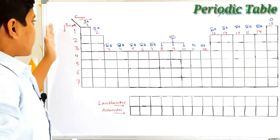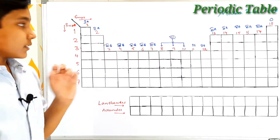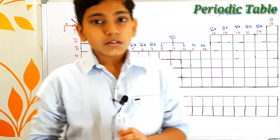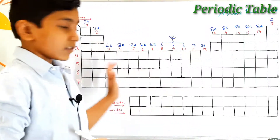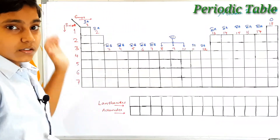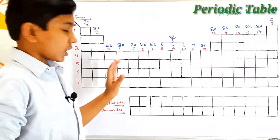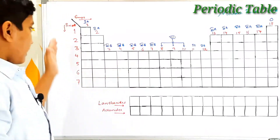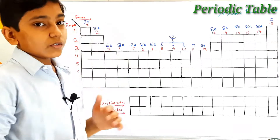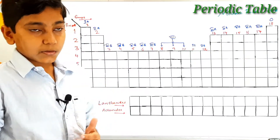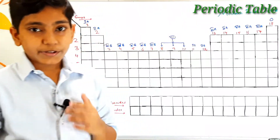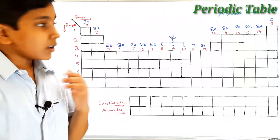Firstly, periods — the rows in the modern periodic table are called periods. We find seven periods in the modern periodic table. Then we have groups — groups are the columns in the periodic table, and we find 18 groups in the modern periodic table.